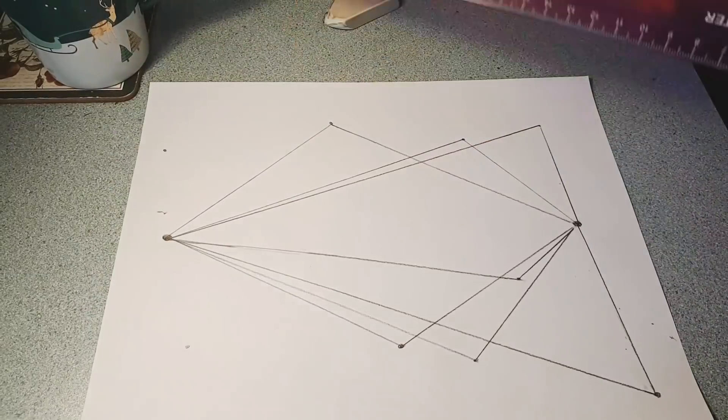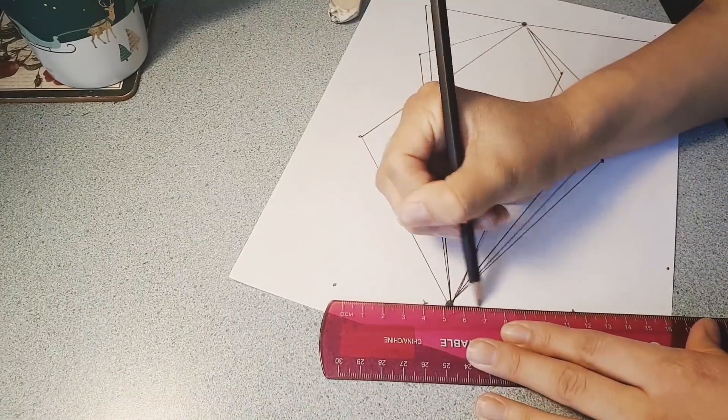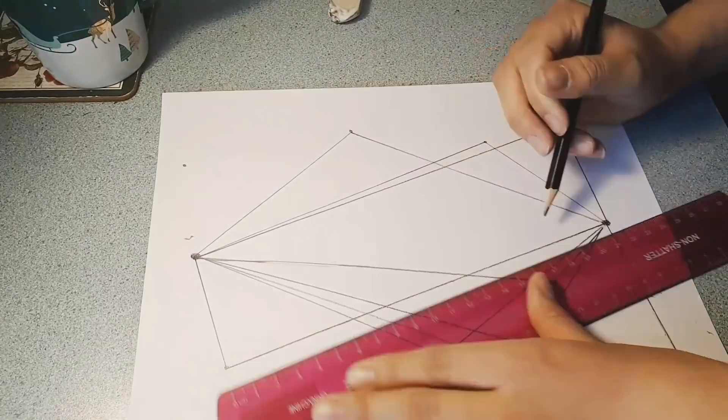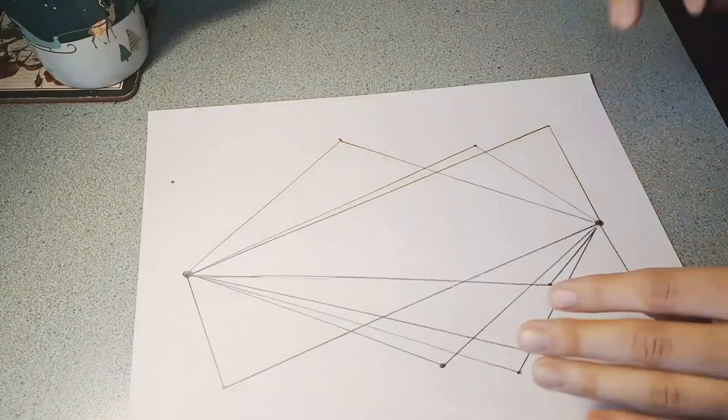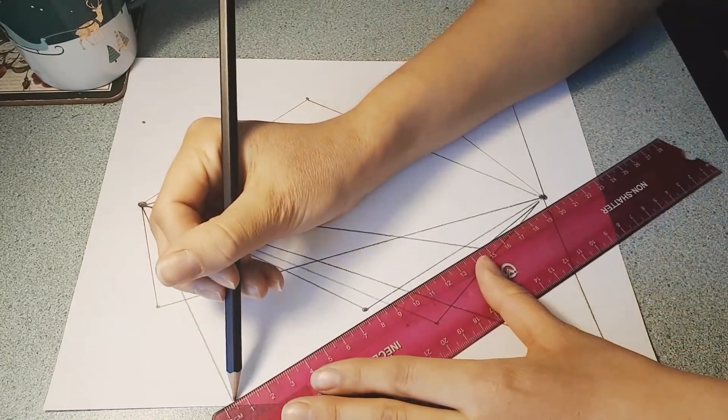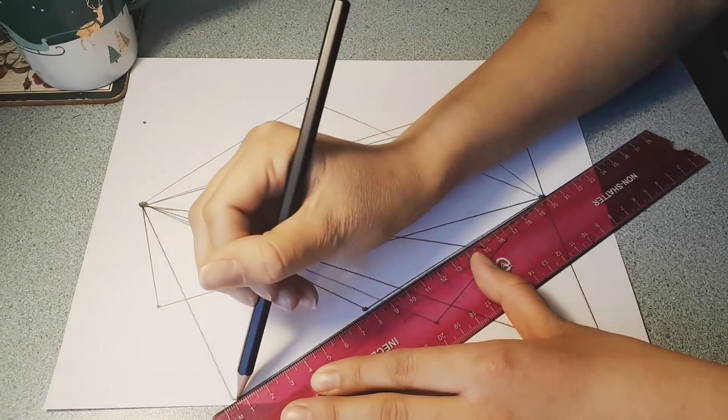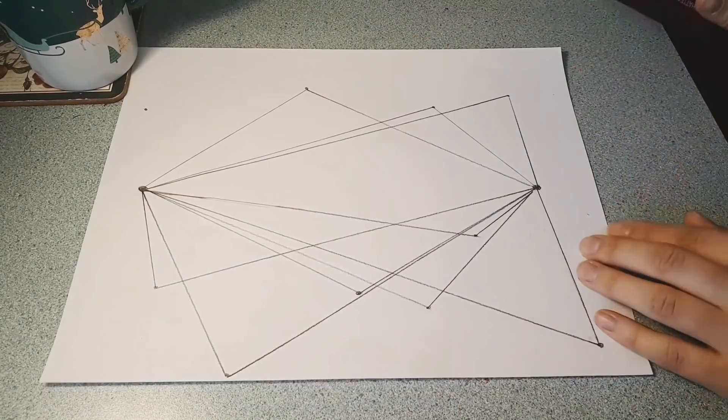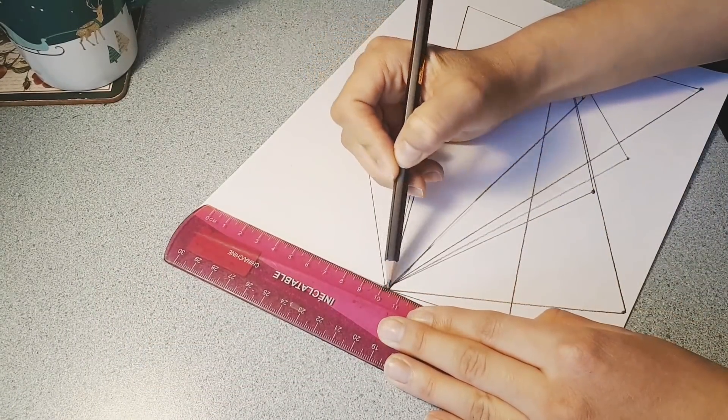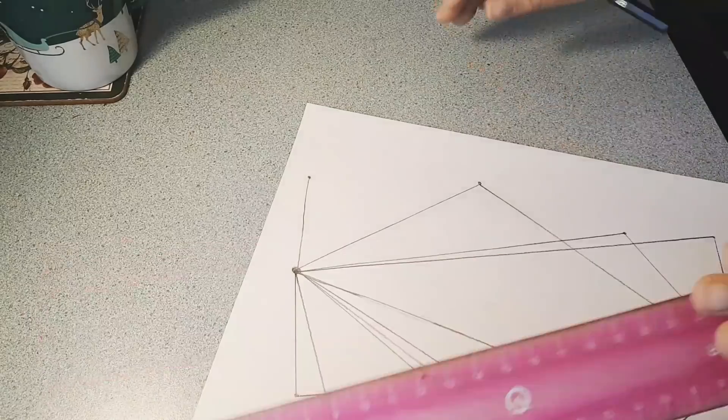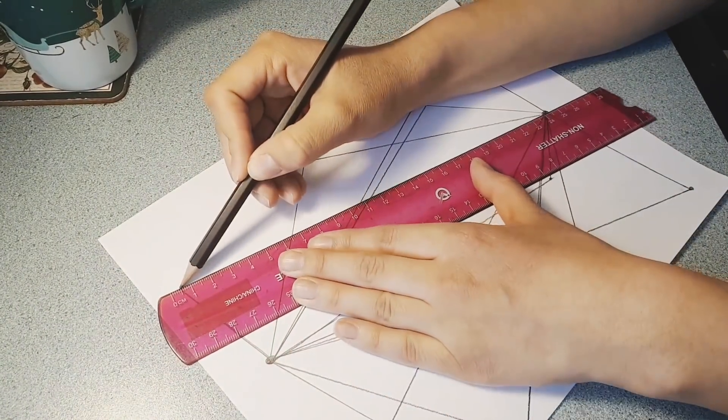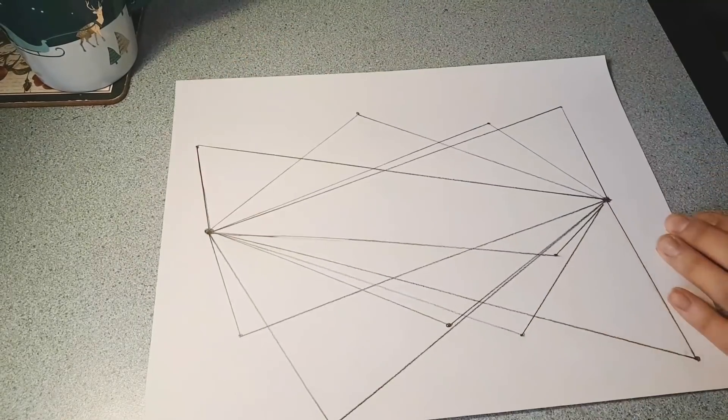What kind of angles do you think we might find in our drawing? Obtuse? Acute? Think about it.